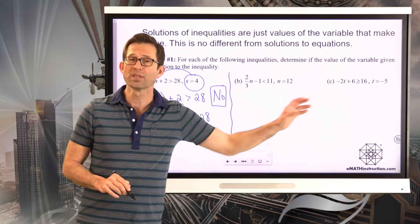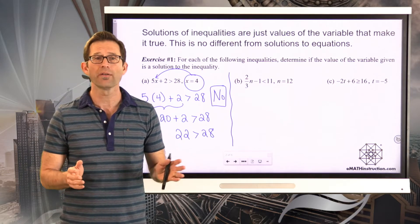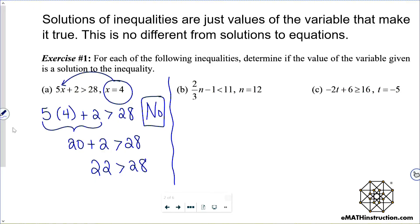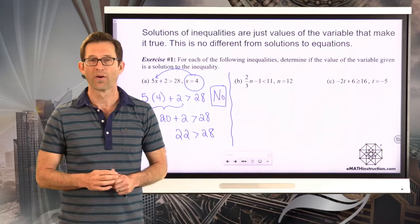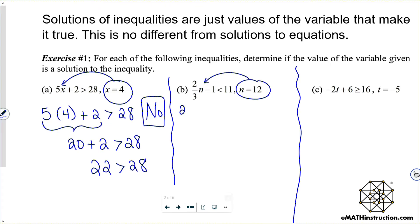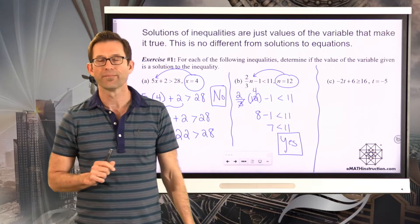Now letters B and C are a little more challenging because they've got fractions and negatives. Try both of them to see if you can determine whether the supplied value of the variable is a solution. For letter B, I'm going to take n equals 12 and throw it into the inequality. Two-thirds times 12 minus 1 is less than 11. One-third of 12 is 4, two times 4 is 8, so 8 minus 1 is less than 11, giving 7 is less than 11. Yes, n equals 12 is a solution.